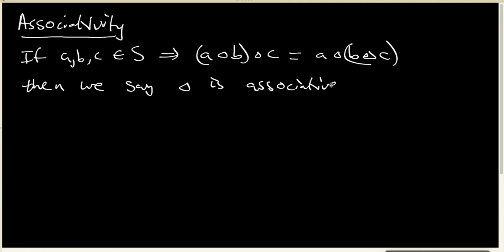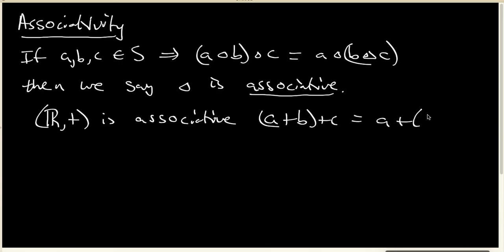It turns out that associative operations are extremely important in mathematics. In fact, they're so important that mathematicians really strongly prefer operations that are associative. As a basic example, the real numbers under addition is associative because you already know that (A plus B) plus C and A plus (B plus C) are exactly the same thing.